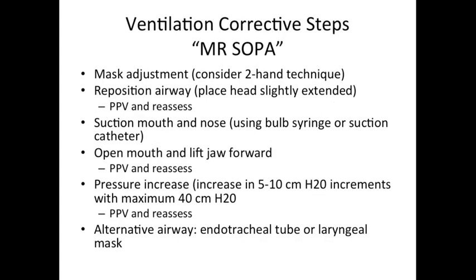Ventilatory corrective steps, or Mr. SOPA, includes the following: Adjust your mask — make sure you have a proper seal and consider the two-hand technique. Reposition the airway by placing the head slightly extended. Suction the mouth and nose using a bulb syringe or suction catheter. Open the mouth and lift the jaw forward. Increase your pressures in 5 to 10 cm H2O increments with a maximum of 40 cm H2O.